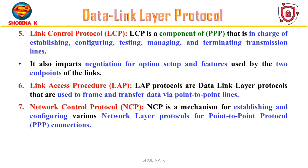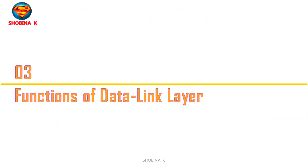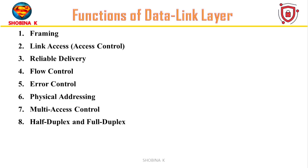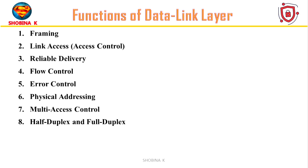Now let's move on and understand the functions of the data link layer. The data link layer serves several key functions in a network, which include framing, link access or access control, reliable delivery, flow control, error control, physical addressing, multi-access control, and half duplex and full duplex.